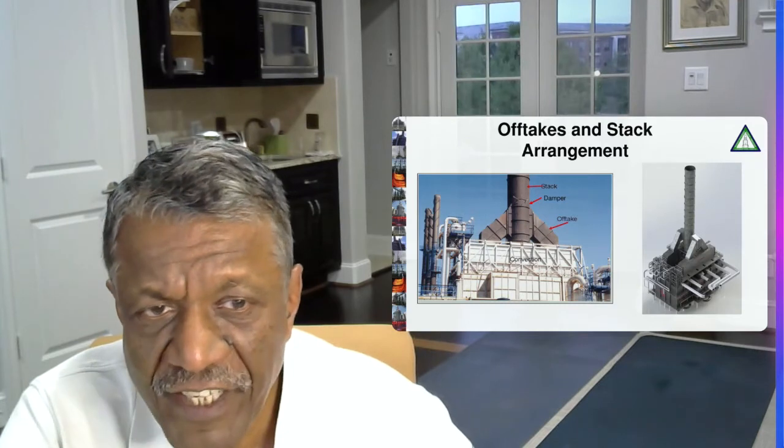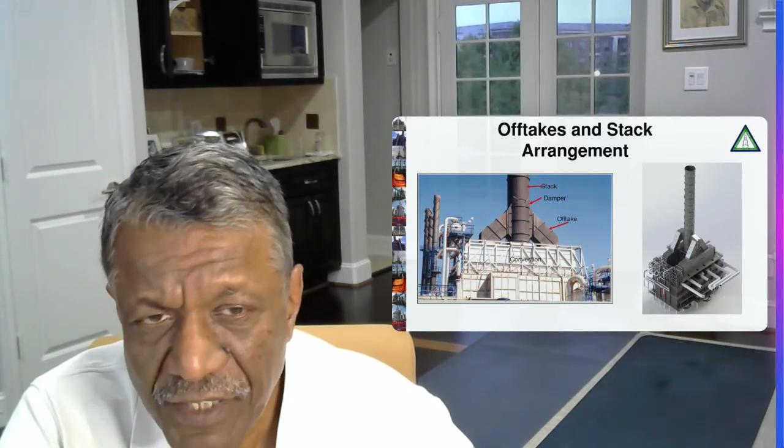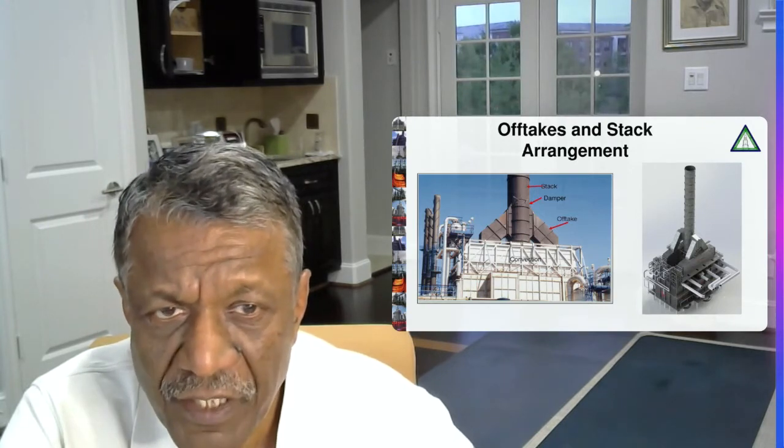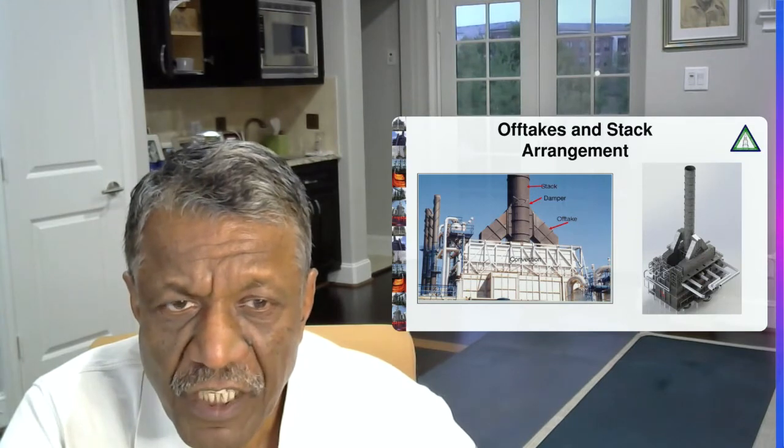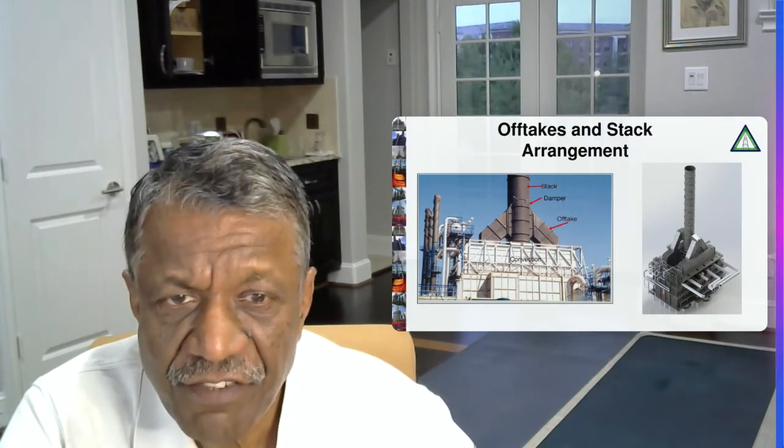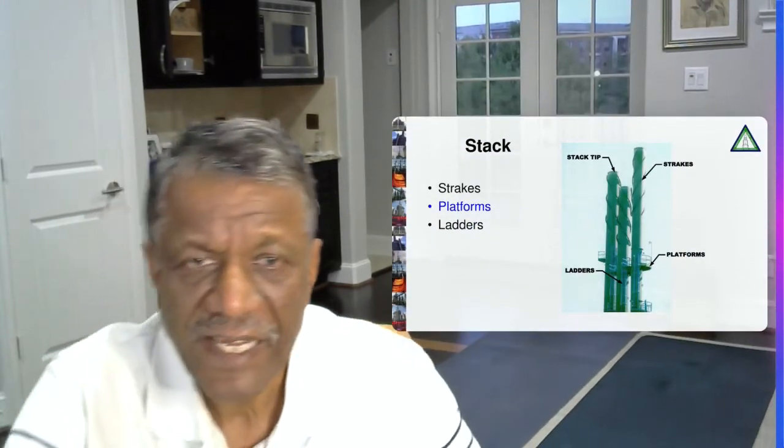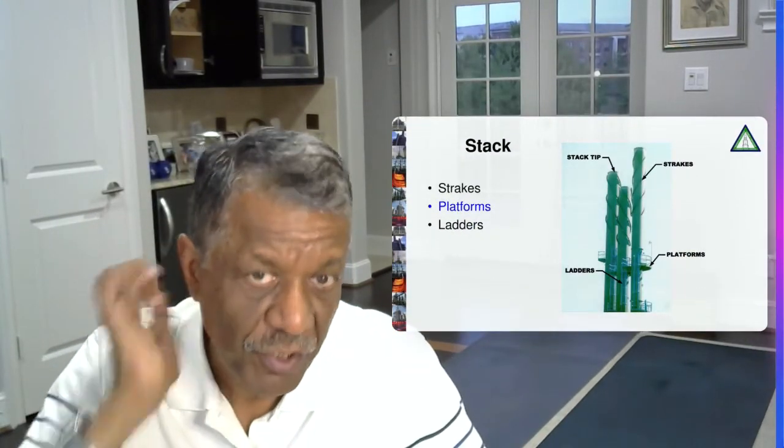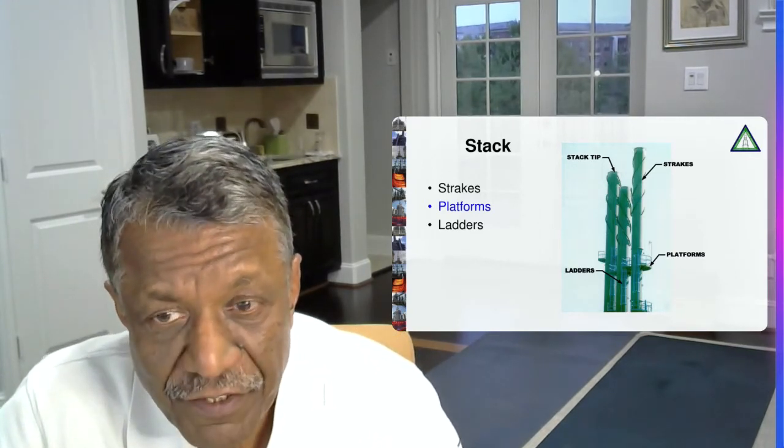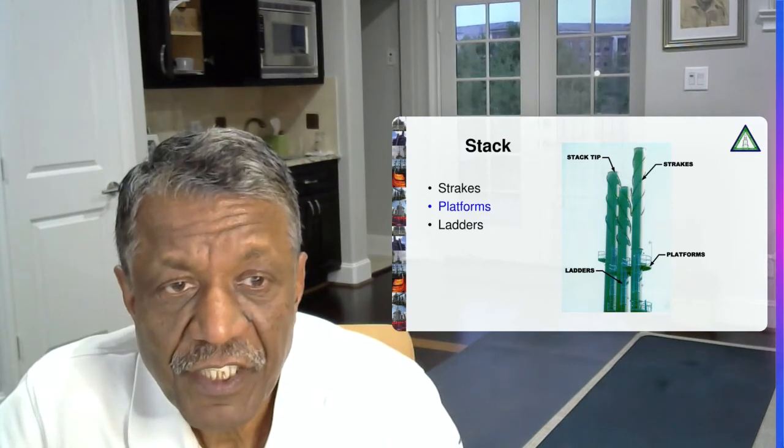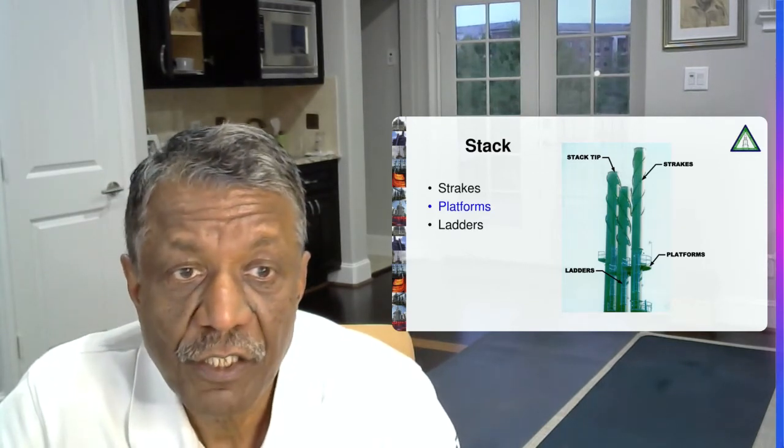Once the heat is recovered, we have the cold flue gases and they need to be disposed in the stack. So we use off-take ducts to transfer the flue gases from the convection to the stack. You can see a damper. A damper is like a butterfly valve which controls the draft in the furnace. So stacks are again a very important component. Their primary function is to dispose the flue gases. The secondary function is to create a draft in the fire heater, so they are basically dual function.